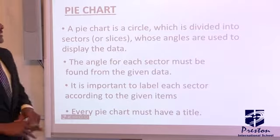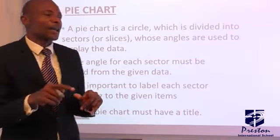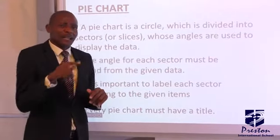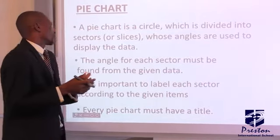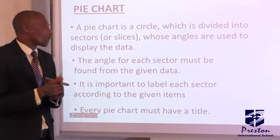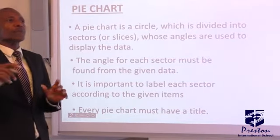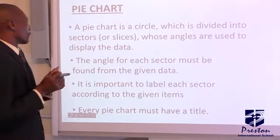A pie chart is a circle. From the word pie is a circle which is divided into different sectors or slices whose angles are used to display the data. And don't forget the angle of a pie chart represents the frequency of the given value.